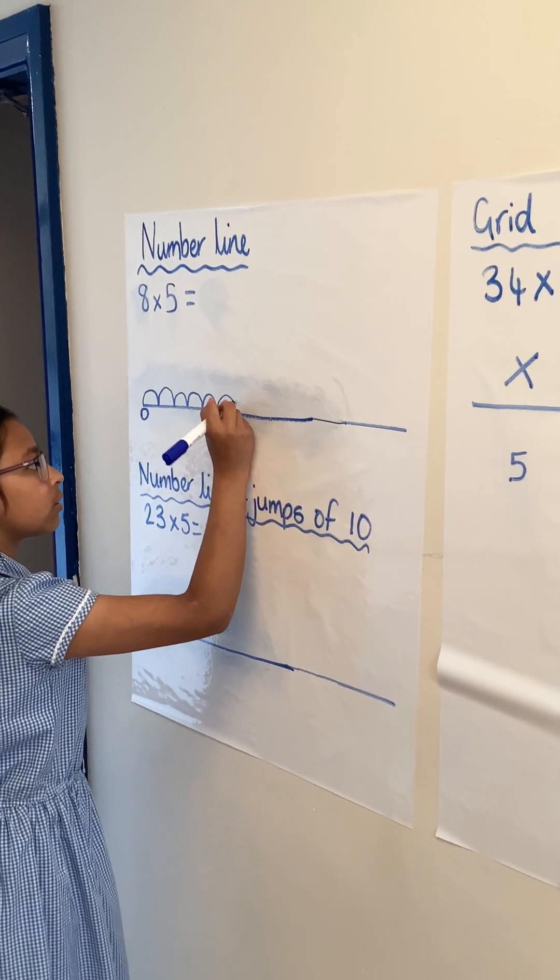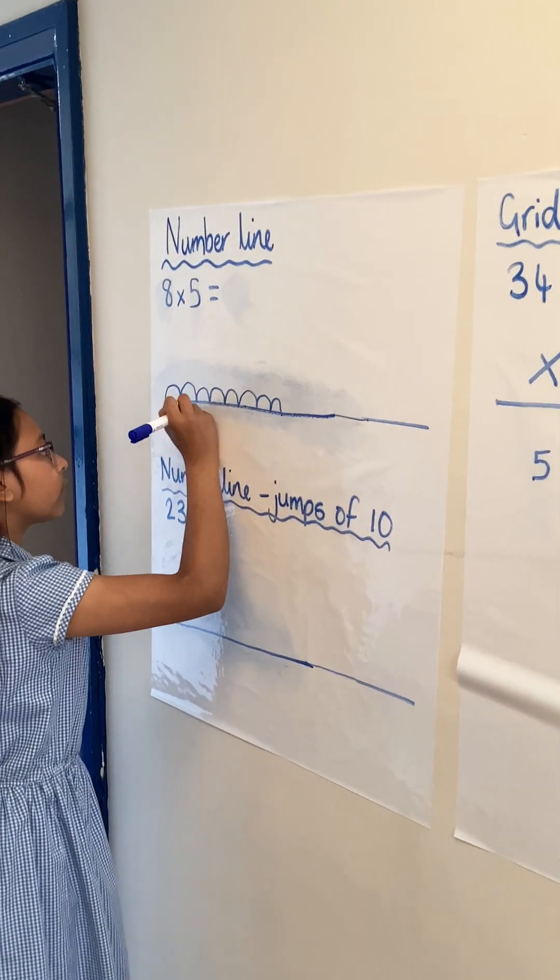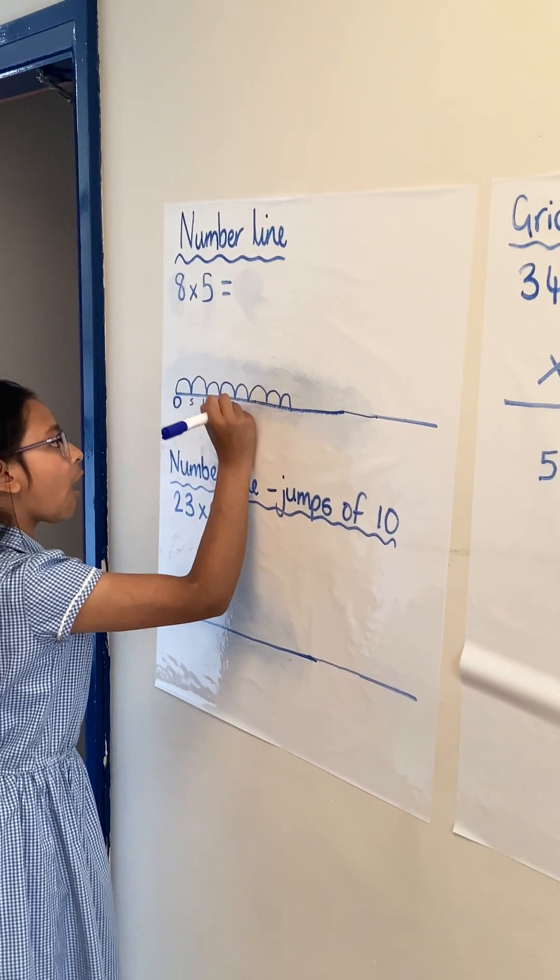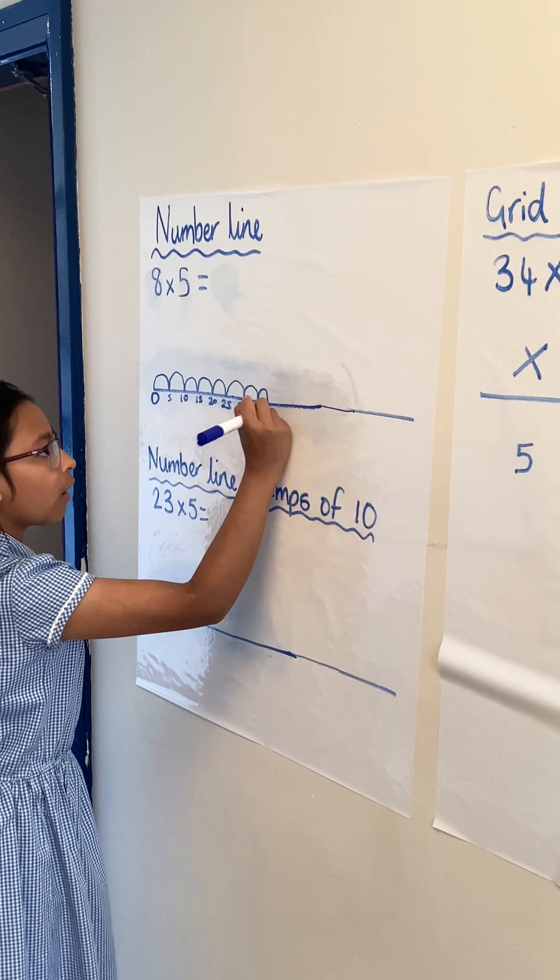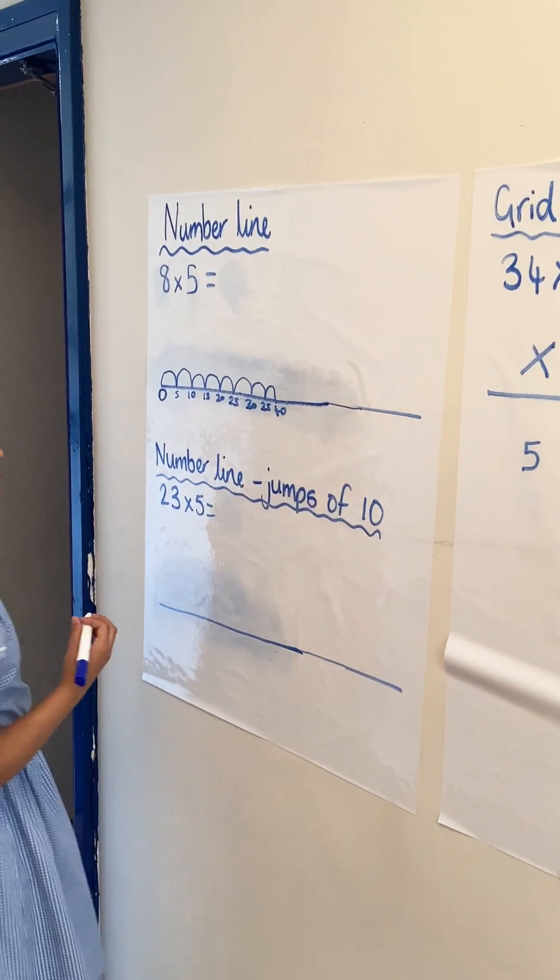Each time the jump touches the number line, we're going to put a multiple of 5. So, 8 times by 5 is 40.